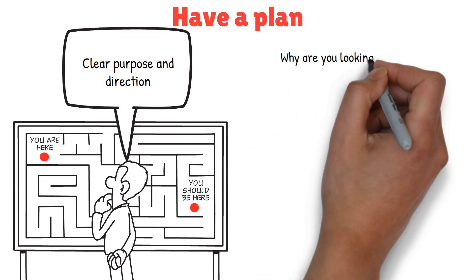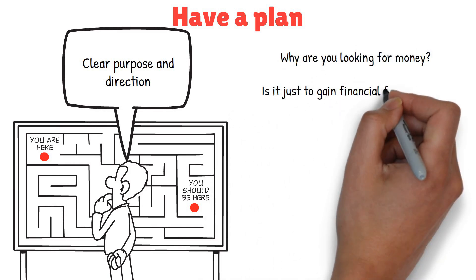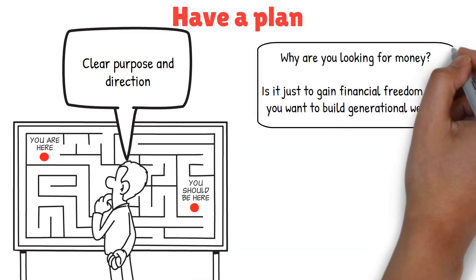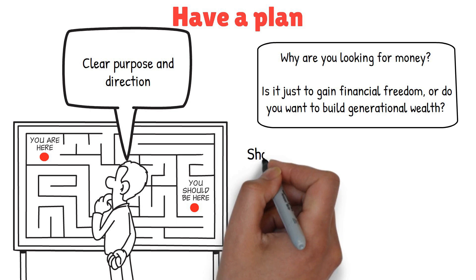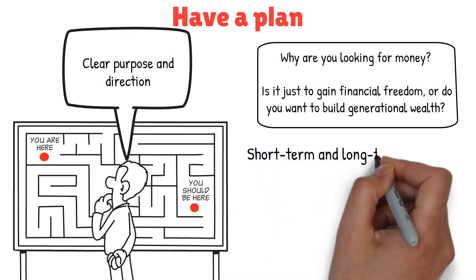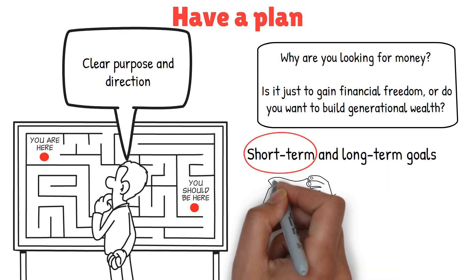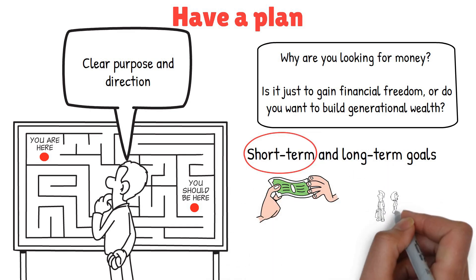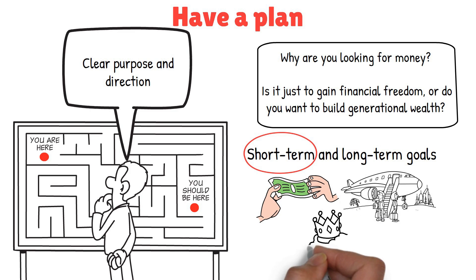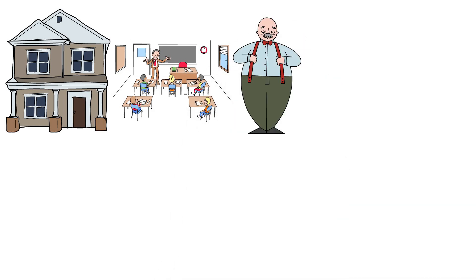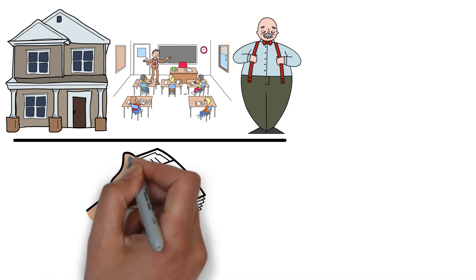So, ask yourself, why are you looking for money? Is it just to gain financial freedom, or do you want to build generational wealth? Understanding your true motivations will help you create a meaningful and effective plan. A good plan starts with defining your short-term and long-term goals. Short-term goals could be things like paying off debt, saving for a vacation, or building an emergency fund. Long-term goals might include buying a house, saving for your children's education, or planning for retirement. By breaking down your goals into manageable steps, you can track your progress and stay motivated.